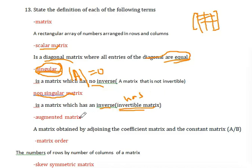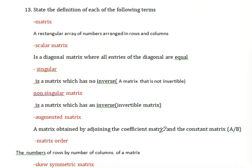Augmented matrix: In a system of linear equations, the coefficient matrix and the constant matrix form the augmented matrix. A matrix obtained by adjoining the coefficient matrix and the constant matrix is called the augmented matrix.